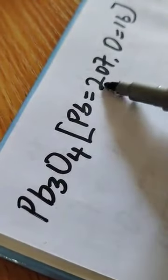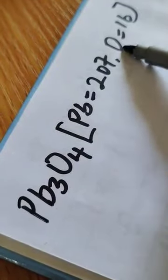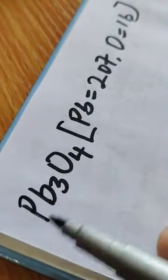We are given this compound, we are told that lead is 207 while oxygen is 16. So we are going to calculate for the relative molecular mass of the compound first of all.